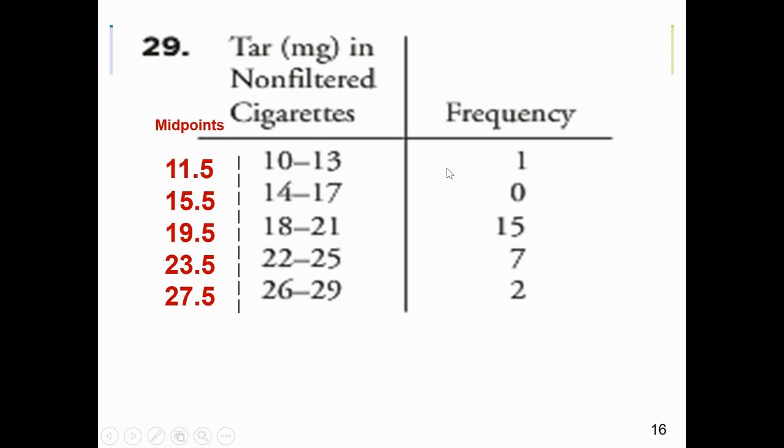Here's another example. Here again, whenever you're given a frequency distribution, you've got two columns with the classes and the frequency. You have to find the midpoints. The midpoint of this first class, 10 plus 13 is 23. Half of 23 is 11 and a half. Notice the class width here is 4. Difference between anyone higher and anyone next higher, or anyone lower and the next lower. The class width is 4. So once I calculate this first class midpoint, all I have to do now is just keep adding 4. Now, I'm going to put these in one list, preferably list 1. I'm going to put the frequency in another list. You've got to find the midpoints.